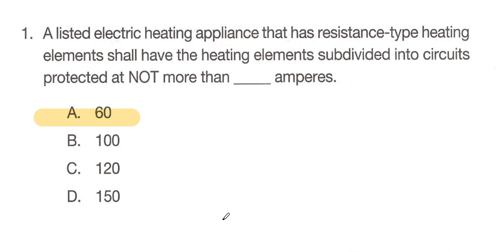With time, you'll get faster, so don't feel bad. You may know right out of the gate that article 422 covers appliances, or you may not. If your state allows it, having tabs on your code book lets you look at your tabs and go straight to the article about appliances, and you can find your answers a little bit faster that way.